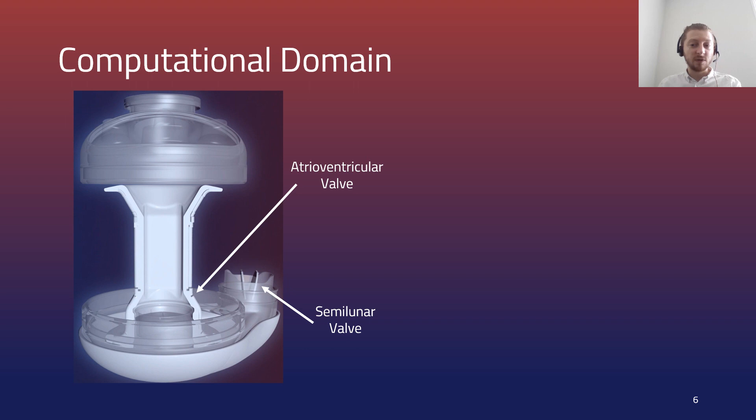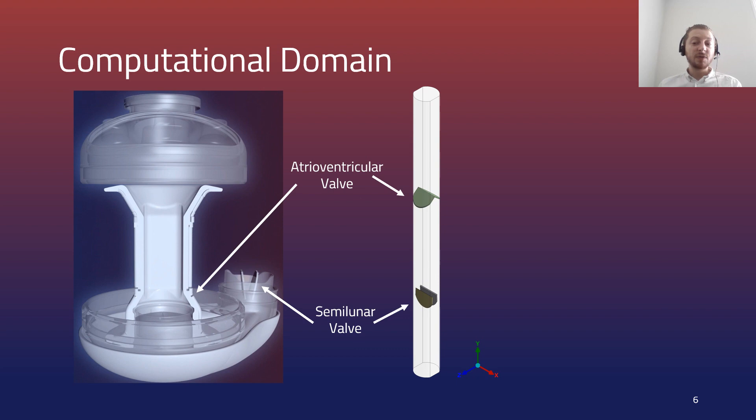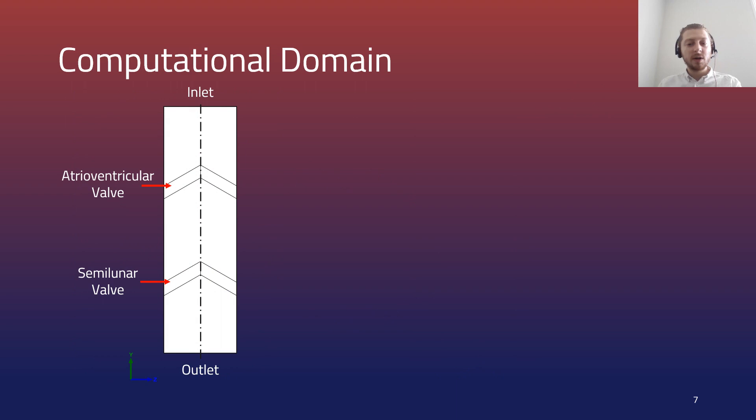To achieve this aim the project focused on the most essential aspect of the problem, the pair of bileaflet valves. The computational domain considered for this study was a simple fluid cylinder containing the two valves in series. This simple model allowed for faster development of the modeling strategy compared to if the full device had been considered initially. The domain was simplified into a quarter model using symmetry planes to decrease the computational cost.